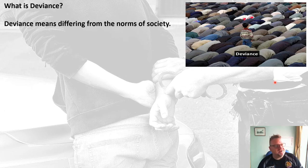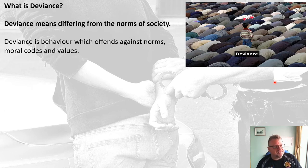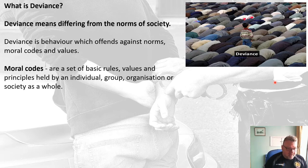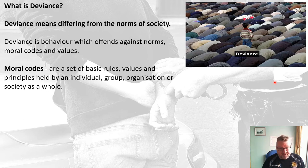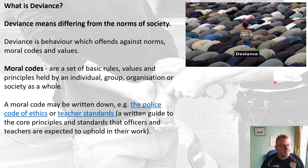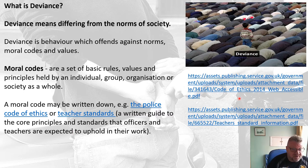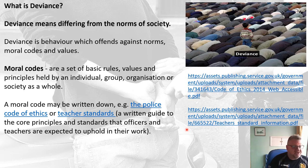Let's explore deviance in more detail. Deviance is differing from the norms of society — offending against norms, moral codes, and values held by the society in which the deviance occurs. Your moral codes are your basic set of rules, values and principles held by an individual, a group, an organisation, or society as a whole. They can be written down — they could be the law. For example, you can look at the police code of ethics or teacher standards — a written guide of core principles and standards.